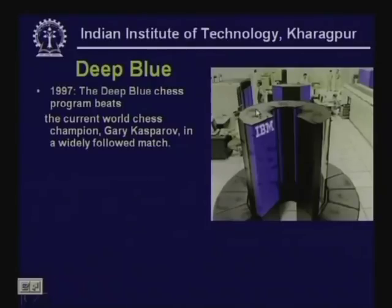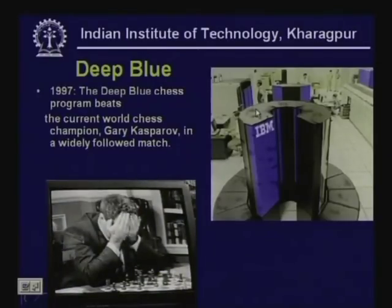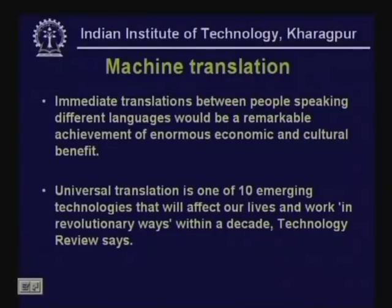In 1997, the Deep Blue chess program developed at IBM beat the current world chess champion Garry Kasparov. In machine translation, if we could have immediate translations between people speaking different languages that would be remarkable, with very wide-ranging economic and cultural implications. In the world today there are people speaking so many different languages that we do not understand.